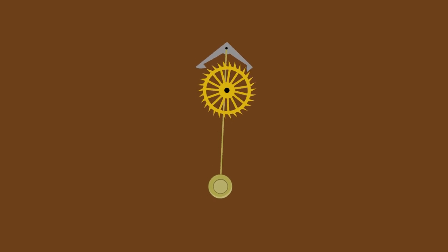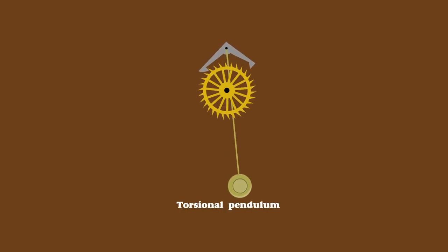Here, the pendulum is a weight attached to a wire or thread. And the torsional oscillation makes the suspended weight twist in one direction, and then in the reverse direction in a horizontal plane. This mechanism is called the torsional pendulum.